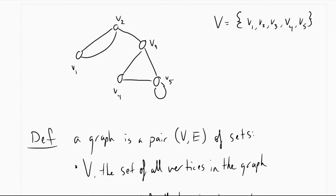So what I've done here is I've gone back up to our example. I've labeled all of the vertices V1, V2, V3, V4, and V5. And I've illustrated what the set V is for our graph. V equals V1, V2, V3, V4, and V5, all collected together in a set.